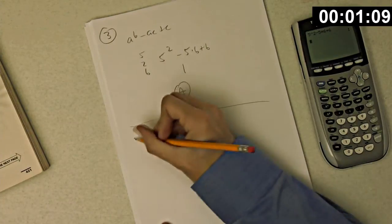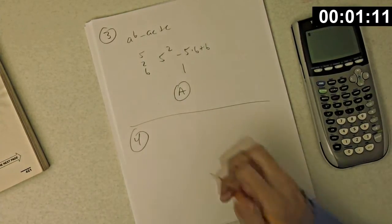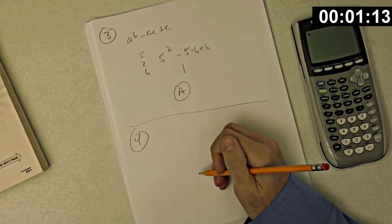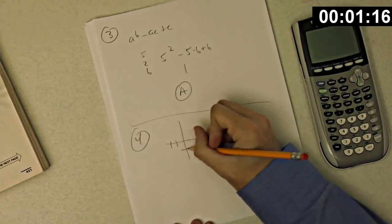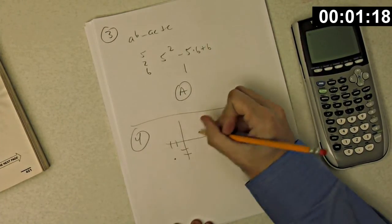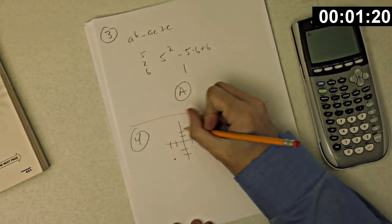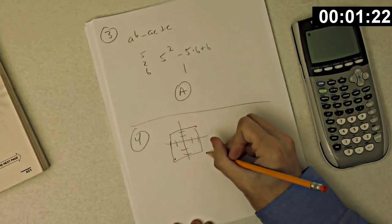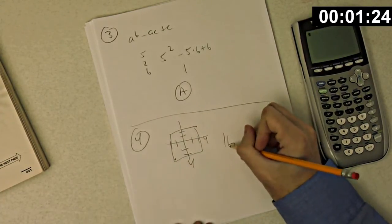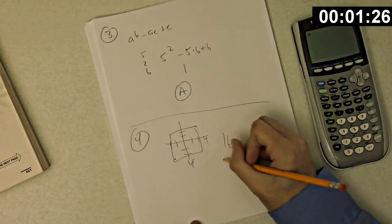Okay, number four. In the xy-coordinate plane, what is the area of the square with opposite vertices at negative 2, negative 2, and 2, 2? Okay, that's going to look like that. 1, 2, 3, 4 by 4, so the area of the square is 16, choice C.